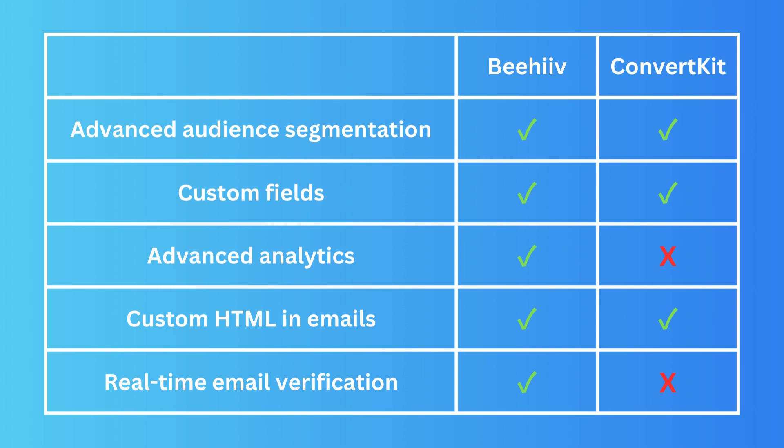With Beehive you can go really deep — you can click on one specific subscriber and view what links they clicked, when they clicked, all of their poll reactions, and literally everything they do with the email or publication you send. That's really great. Beehive is much better for analytics.